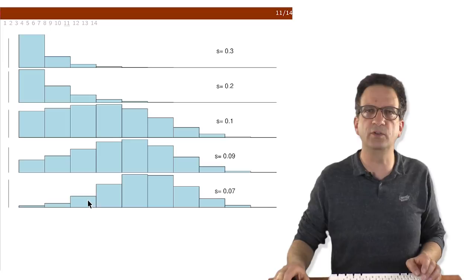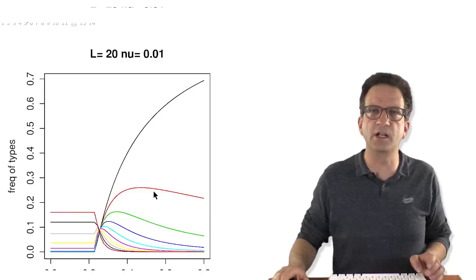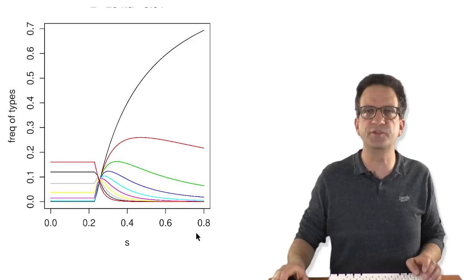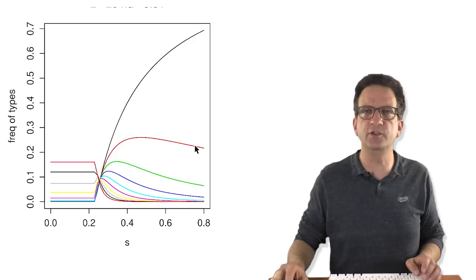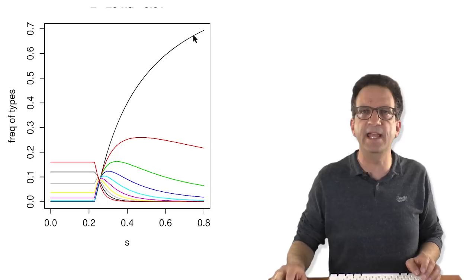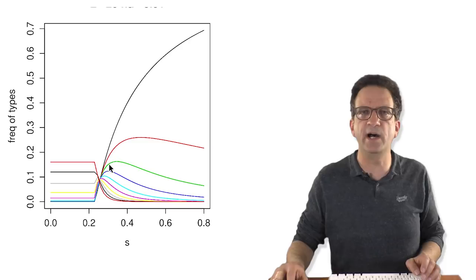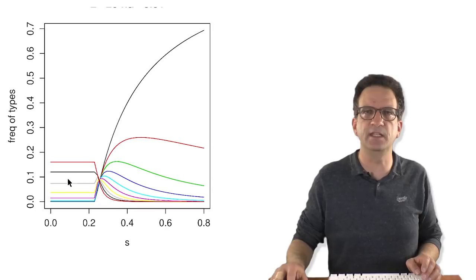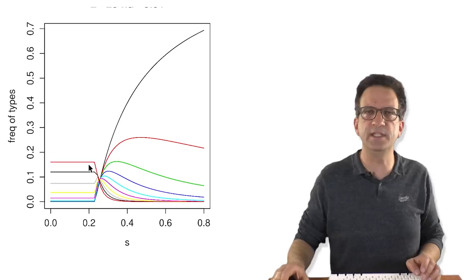Representing this as a graph with s on the x-axis (0 to 0.8) and frequency of each type on the y-axis: black is the optimal type, then types with one, two, three mutations and so on. At s=0.8 (growth rate 1.8), type 0 has the highest frequency. As s decreases, type 0's representation falls and other types rise, until we reach the threshold where type 0 almost disappears and the most represented type has five mutations. At this point, selection no longer affects the population.